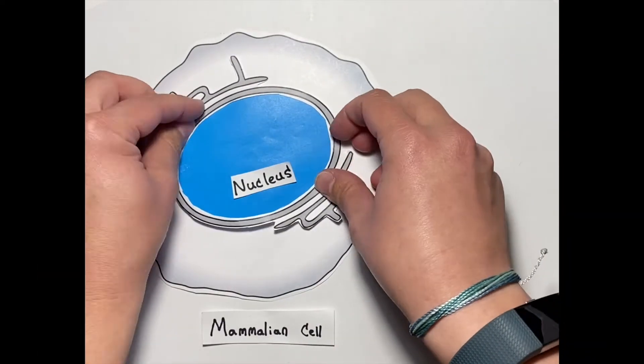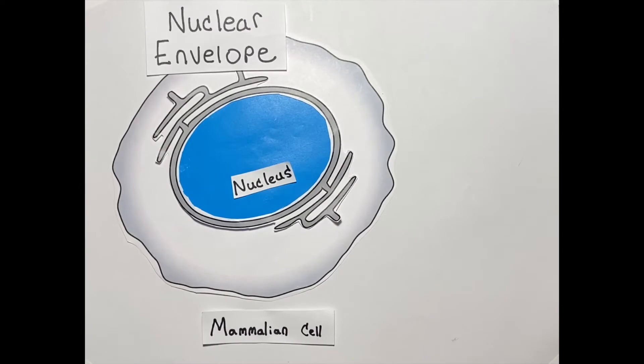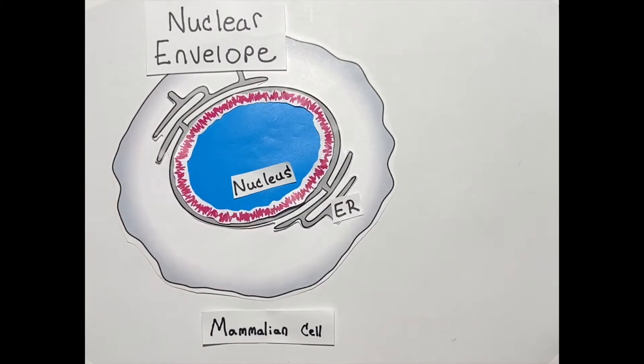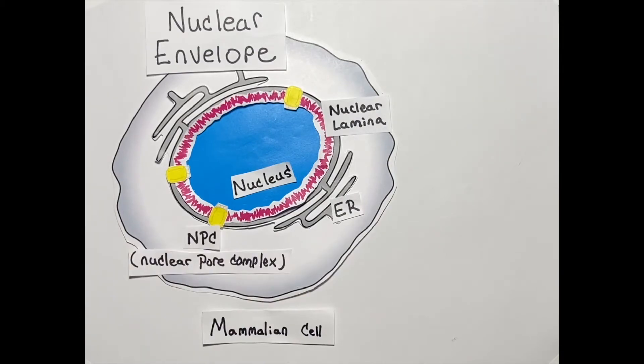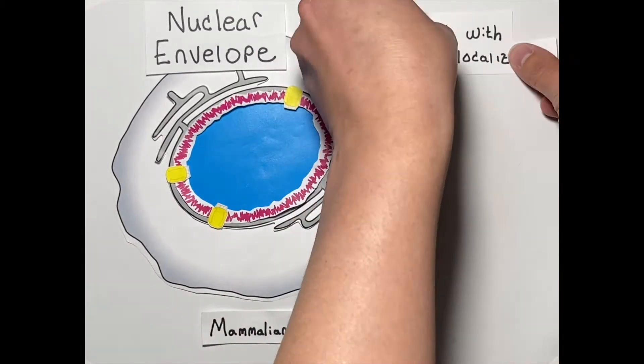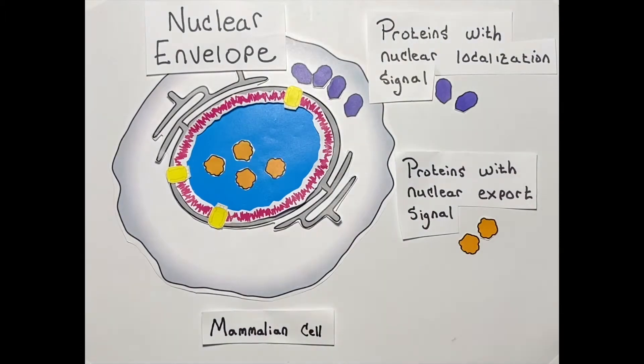The nuclear envelope is a double membrane system connected with the ER. It is supported by a meshwork of lamin filaments and has many nuclear pores. A critical function of the nuclear envelope is to serve as a barrier that controls access of macromolecules to move into and out of the nucleus.